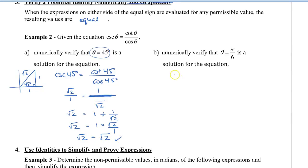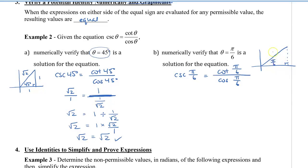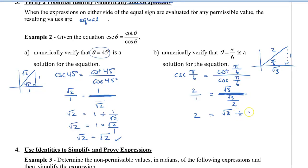Now let's do this with radians. We have cosecant π/6 equals cotangent π/6 divided by cos π/6. Using the special triangle for π/6: the hypotenuse is 2, the adjacent side is root 3, and the opposite side is 1. Cosecant π/6 is hypotenuse over opposite: 2 divided by 1. Cotangent π/6 is adjacent over opposite: root 3 divided by 1. Cos π/6 is root 3 divided by 2. Simplifying the right side by multiplying by the reciprocal, the root 3 cancels and we get 2 equals 2. Verified.